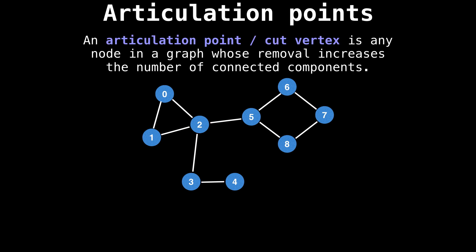Related to bridges, but not the same, are articulation points, which are nodes that, if removed, increase the number of connected components in the graph.